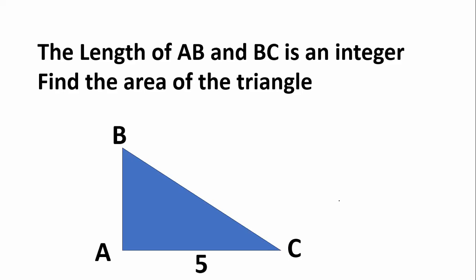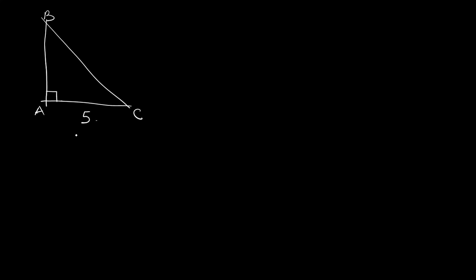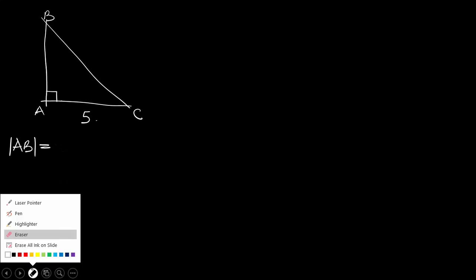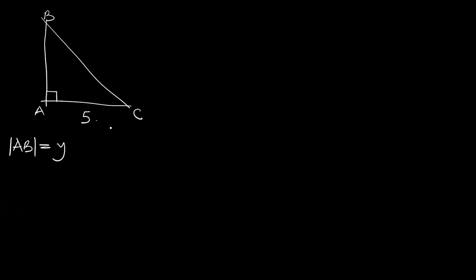There shouldn't be any negative values. Let's begin. We have a triangle like this — you have A, B, C. Here is 5, and this angle is 90, so this is a right-angle triangle. Let's say AB is equal to Y, and BC is equal to X.